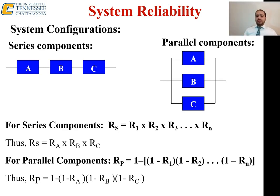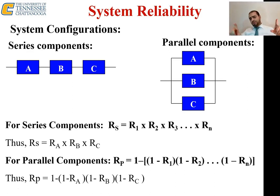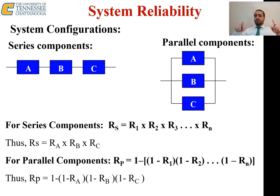For parallel components, the reliability is expressed as: R = 1 − [(1 − R1) × (1 − R2) × (1 − R3)] and so on. Now, an important observation: the overall reliability for a series system is always lower than the lowest individual component reliability in the series.